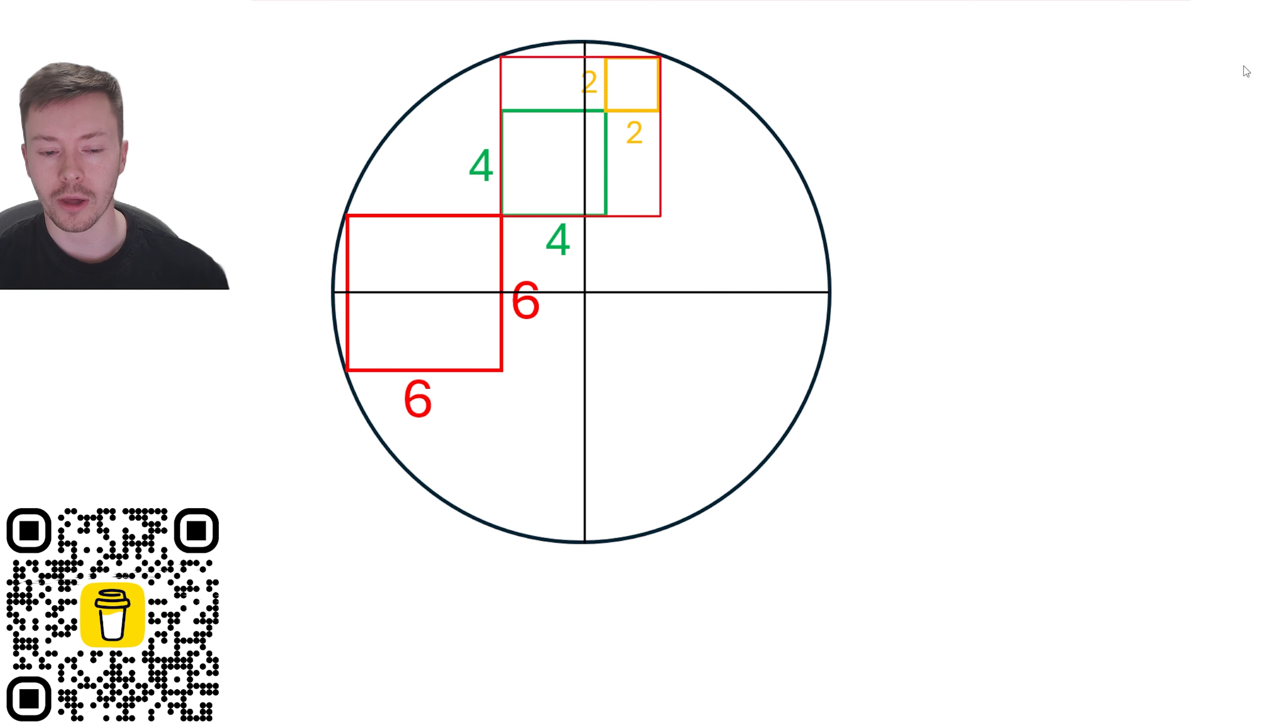Now once you've done that, you might realize that there is some symmetry with this circle. There will be a reflection across both of those diameters, and so you end up with three more six-by-six squares in this circle.